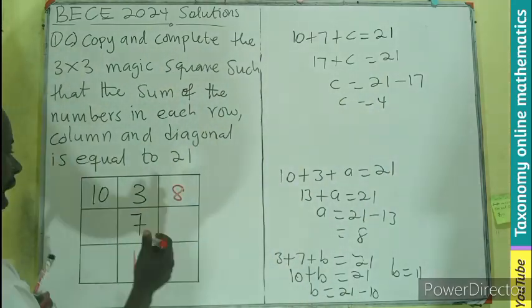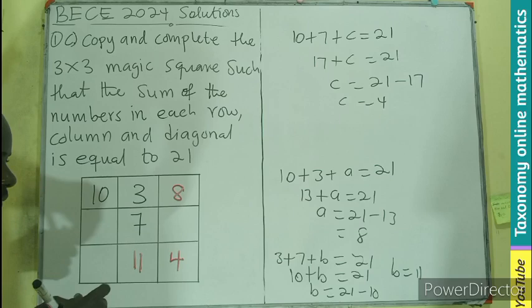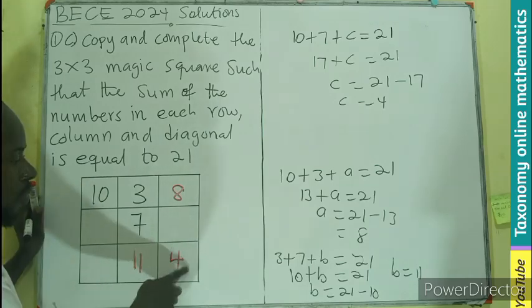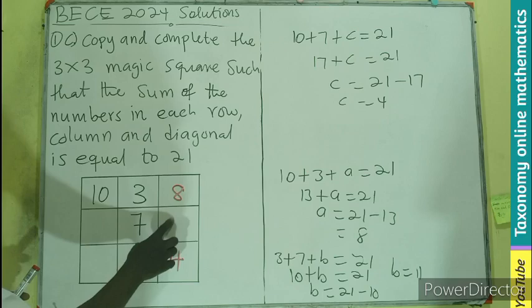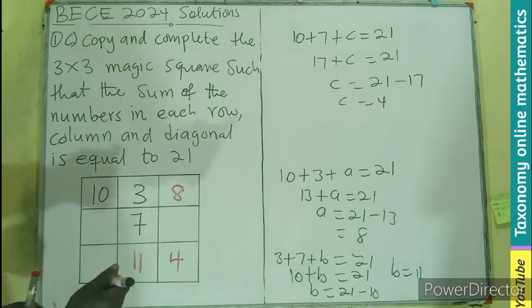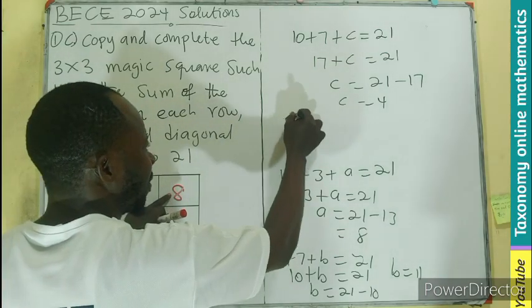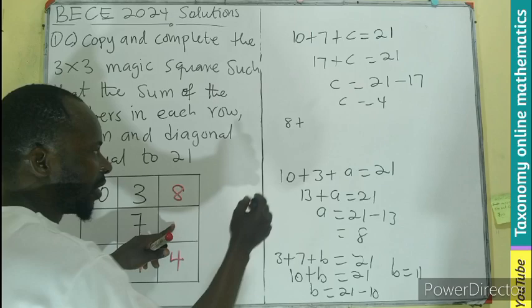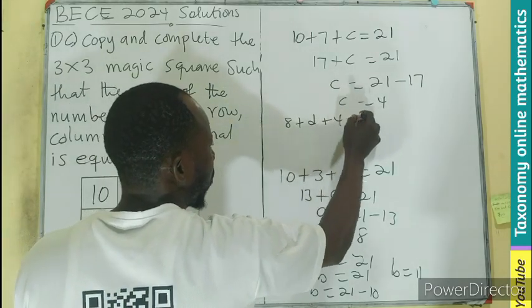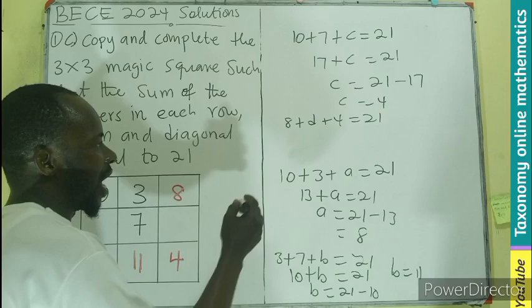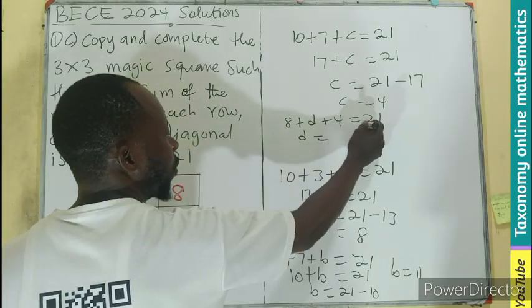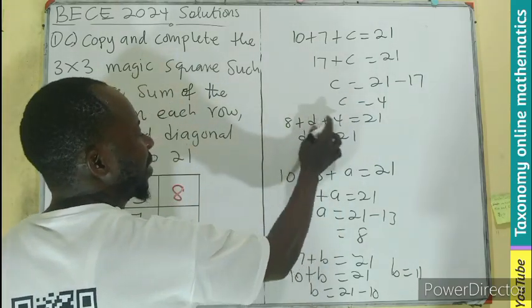So in the case of this diagonal here I will get 4. As long as this is known, this becomes possible. So I can label here d if possible. So I'll be having 8 plus d plus 4, so it also gives us 21. That is what we are doing. So we'll be having d equals 31. The sum of this will be giving you 12.